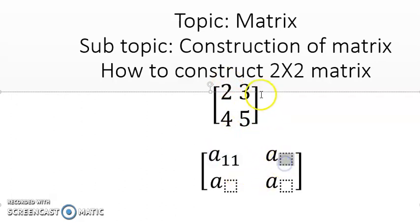And this 3, 3 lies in the first row and it lies in the second column. So this will be one two (a_12). This first one represents the row and the second one represents the column.